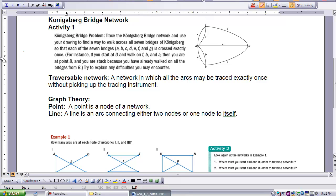If you are able to walk on all of our arcs, those are in this case what the bridges were, exactly one time without retracing your steps or picking up your pencil, you have what's called a traversable network. A network in which all the arcs may be traced exactly once without picking up the tracing instrument.